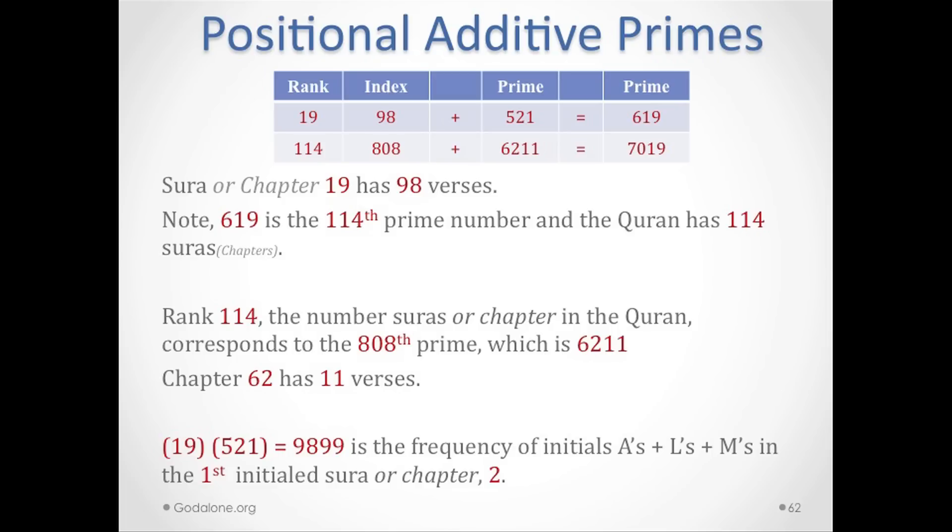Furthermore, 521 times 19 equals 9899, which is the frequency of initials Alif Lam Meem in the first initial surah, chapter 2. So you see, line 19 gives us so much information about the structure of the Quran.